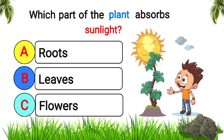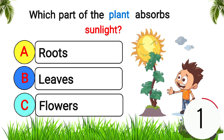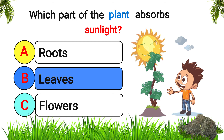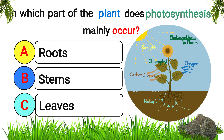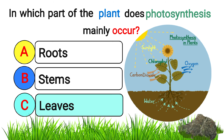Which part of the plant absorbs sunlight? Answer: leaves. In which part of the plant does photosynthesis mainly occur? Answer: leaves.